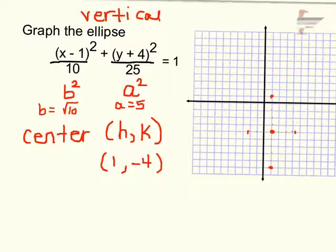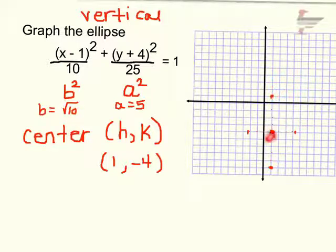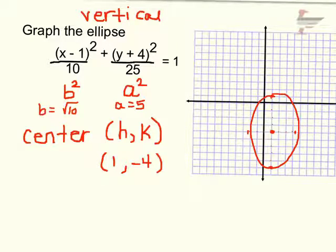To recap: a squared was the larger number, a is 5, so I went 5 units up and 5 units down because it was below y. The 10 is below x, so the square root of 10 gives me b, approximately 3, and from my center I went approximately 3 units in both x directions. That's the ellipse graphed.